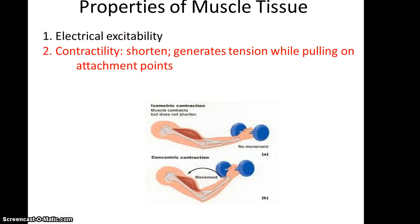Next is contractility — the ability to shorten and, in the process, generate tension so that the muscle is able to use that force to move something, basically what it's attached to. So, as shown in the picture, lifting that dumbbell.